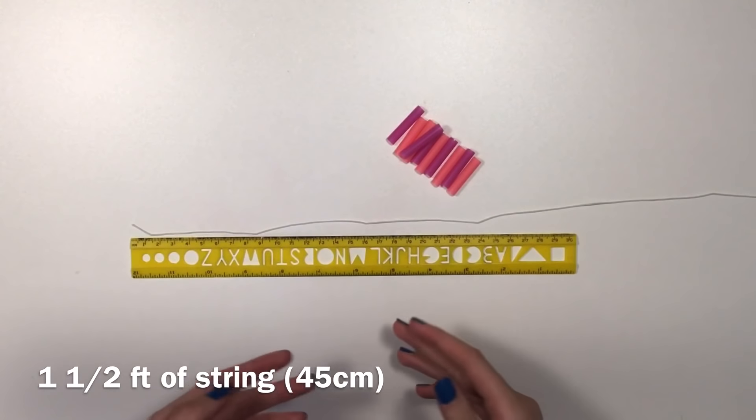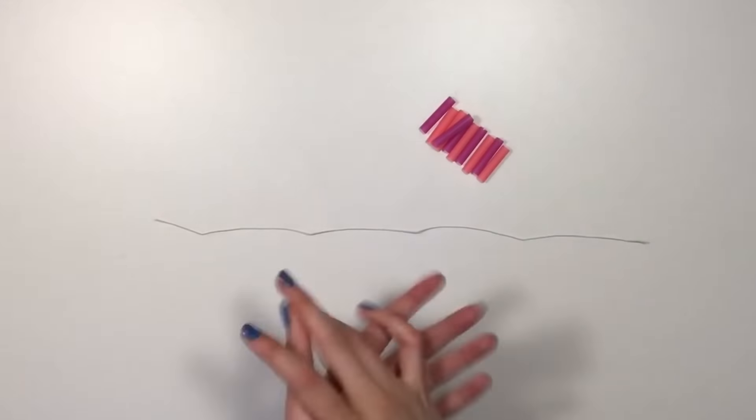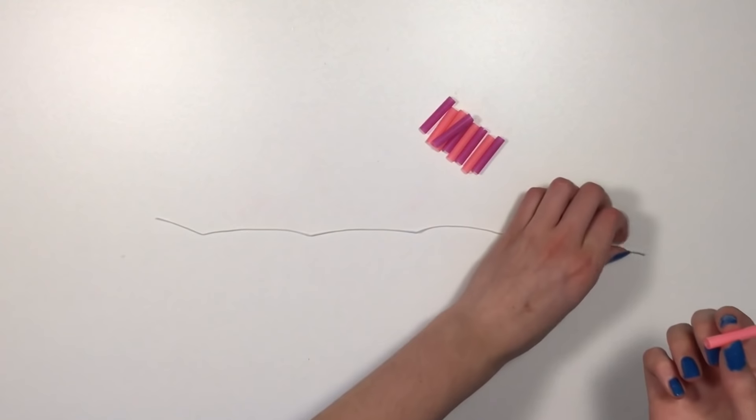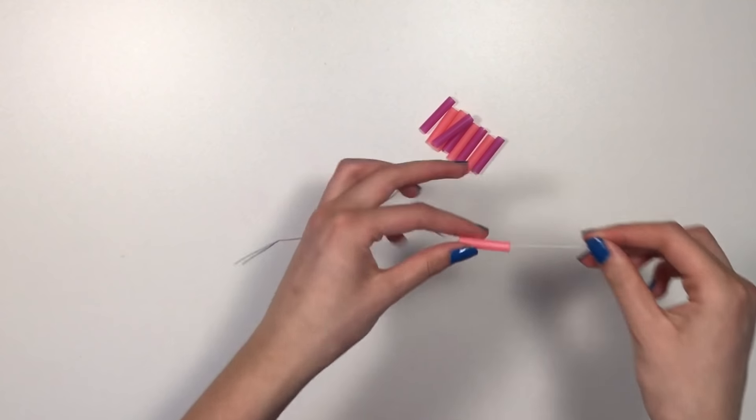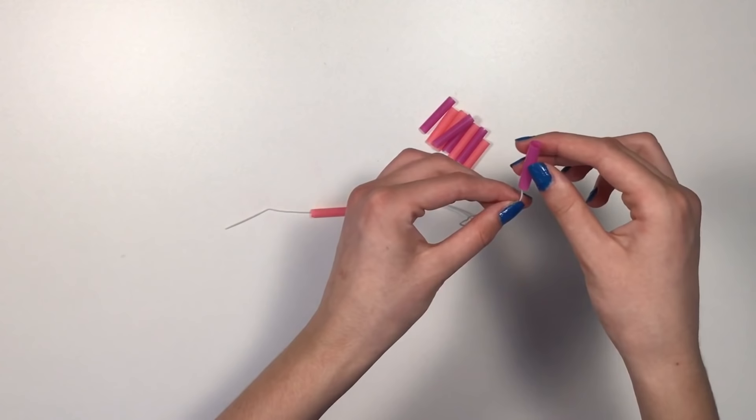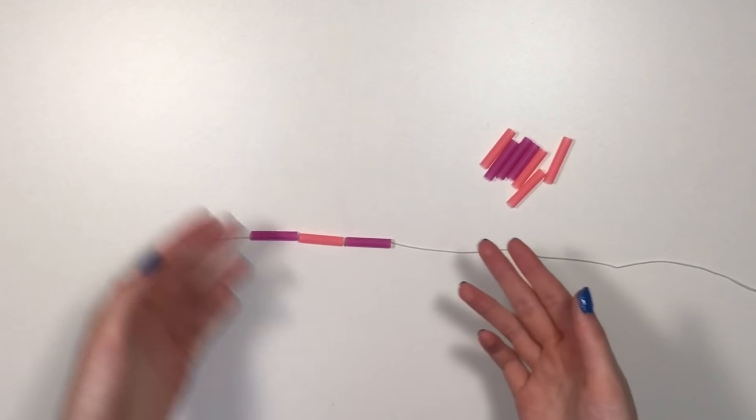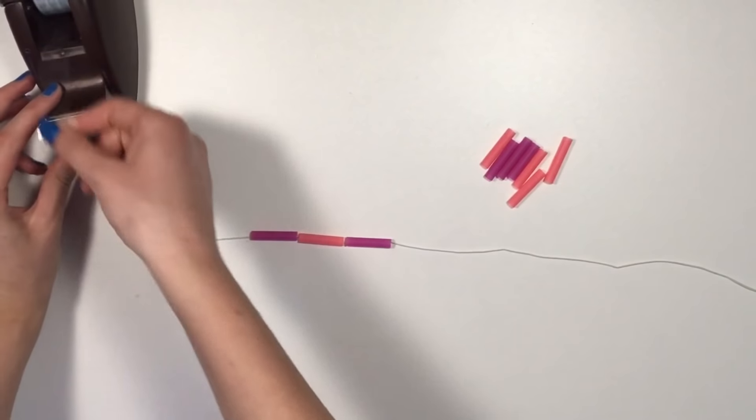The amount of string you need depends on the amount of straws you have, so I'd say about one and a half feet or 45 centimeters of string is enough. Now what you're gonna do is you're just gonna start putting on the straws onto your string just as if they're beads. I'm gonna do them alternating in color so that it looks cool. And while you're putting on the beads, if you don't want them to slide off, just grab a piece of tape.